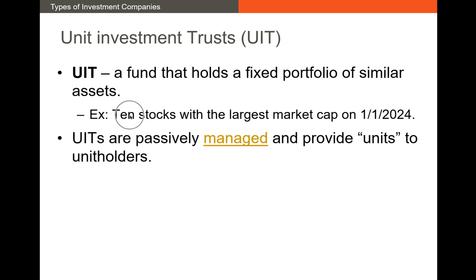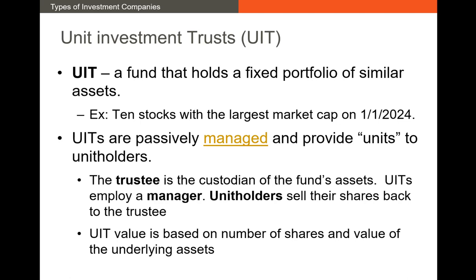Whatever those 10 stocks were, those are the 10 stocks that remain in this portfolio. If you want to own shares of a UIT, you buy what we call units. The UIT has a portfolio containing those stocks and sells units to unit holders. UITs generally have a trustee — a person or organization that oversees the fund's assets — who will typically employ a manager to buy and sell assets initially. Since UITs are passively managed, the expense ratio is typically quite low. If you don't want to own the portfolio anymore, you simply sell the shares back to the trustee.